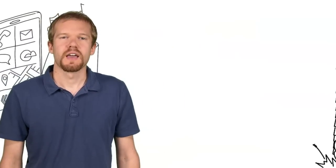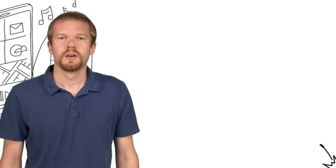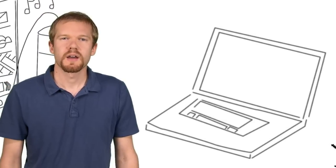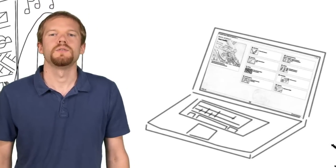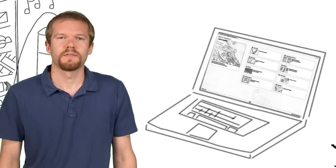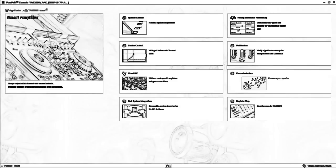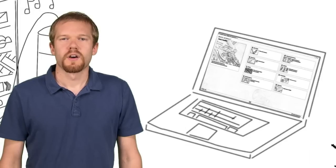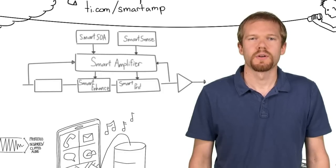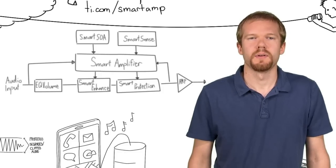In order to understand your speaker, a detailed characterization is required. PurePath Console 3, also known as PPC3, takes the guesswork out of this procedure by providing an easy-to-use graphical user interface to step through the process via wizard or advanced modes. During characterization, detailed measurements of the target speaker excursion, SPL, and temperature are taken via TI Smart Amp Learning Board to fully understand the speaker's capabilities.